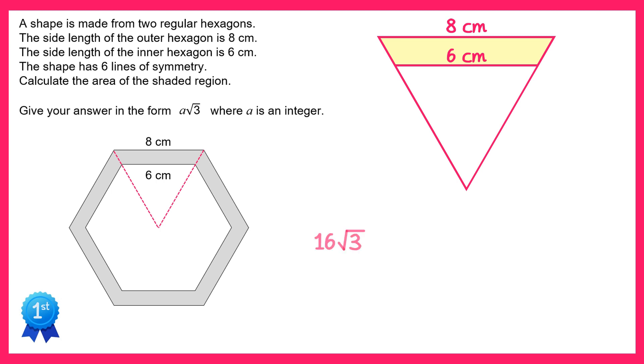So the big triangle was 16 root three, take away the small triangle which was nine root three, gives you seven root three. So this area up here equals seven root three.